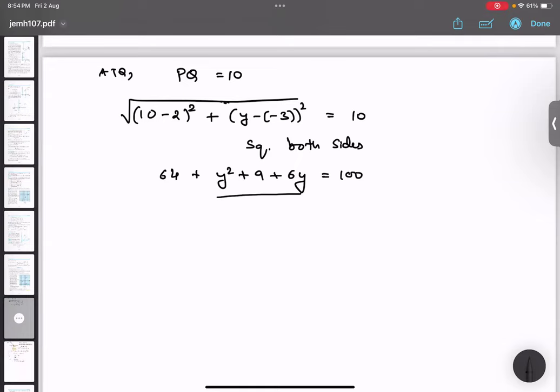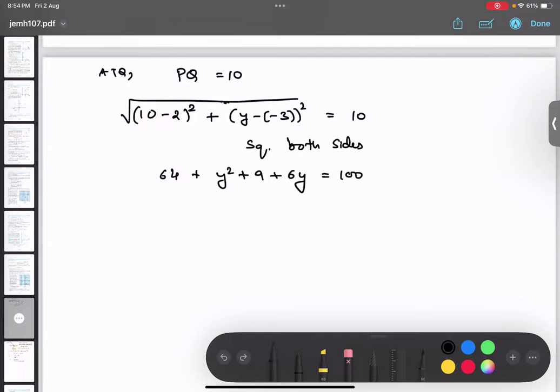Now, since this is a quadratic, so I am going to keep this thing to the left hand side and simplify. So y square plus 6y, 64 plus 9. What is the answer? 64 plus 9? 73. And I am going to subtract 100. Because it is going to the left side. So 73 minus 100, minus 27 equals to 0.